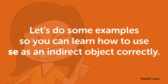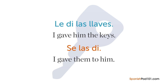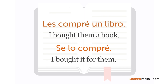The pronoun SE as an indirect object is used instead of LE or LES when SE comes before one of the pronouns LO, LA, LOS, or LAS acting as direct objects. From 'Le di las llaves' meaning 'I gave him the keys,' you can say 'Se las di' meaning 'I gave them to him' — SE replaces the indirect object LE, and LAS replaces the direct object, the keys. From 'Les compré un libro' meaning 'I bought them a book,' we get 'Se lo compré' meaning 'I bought it for them' — SE replaces the indirect object LES before the direct object LO.